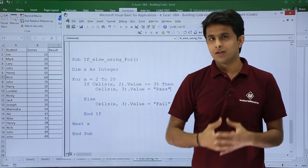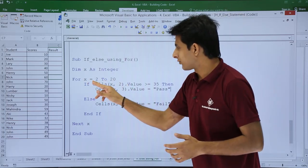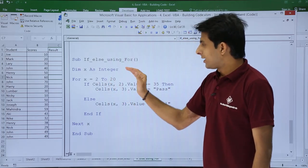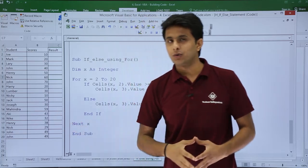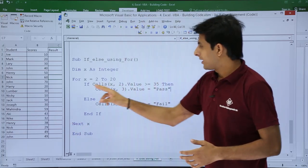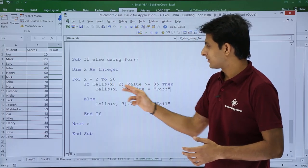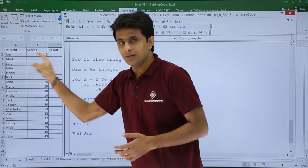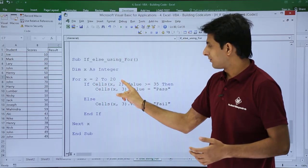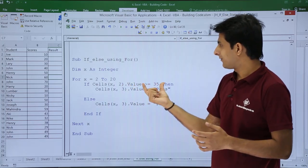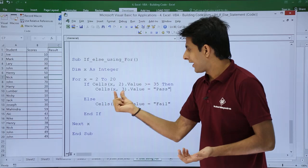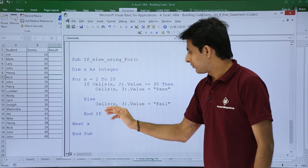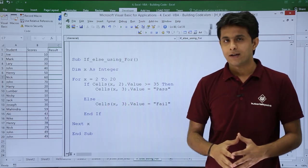Sub procedure if else using for loop. Dim x as integer, I have defined a variable x. For x equal to 2 to 20 - I started from 2 because student scores start from row number 2, the first row is for the heading. If cells(x,2).value - that's column 2, row number 2 - greater than 35, then cells(x,3).value will be given as pass. If not, the value in the third column will be given as fail.